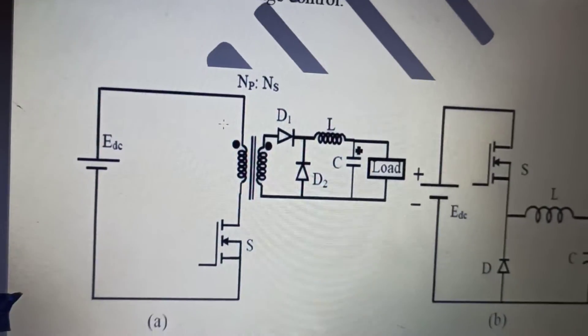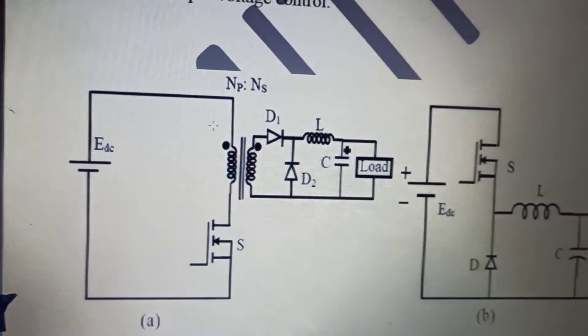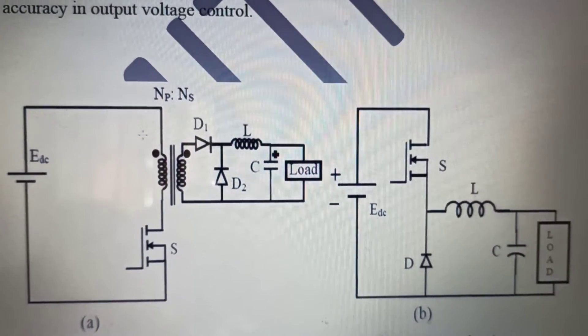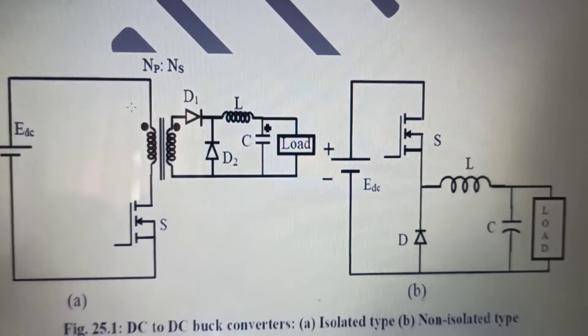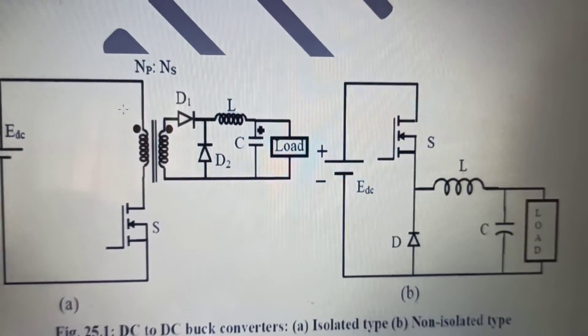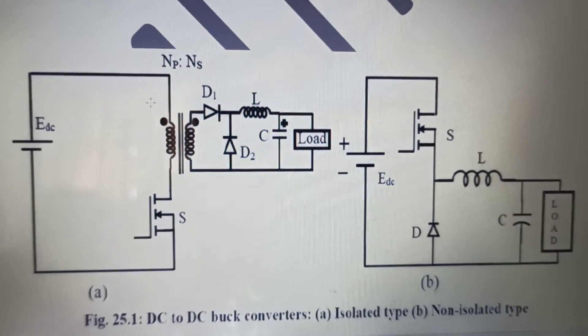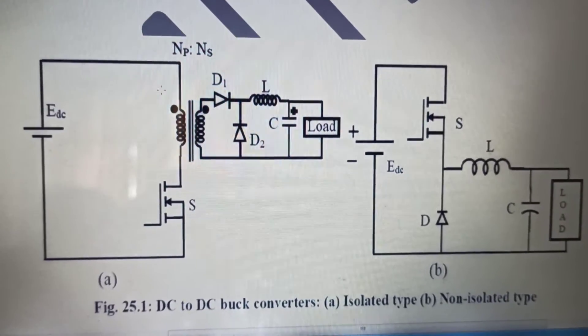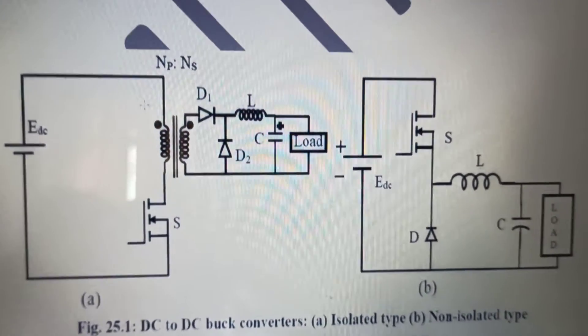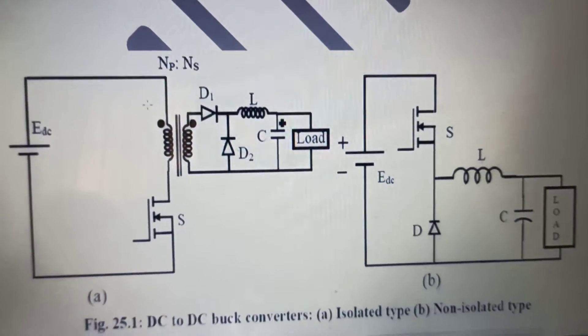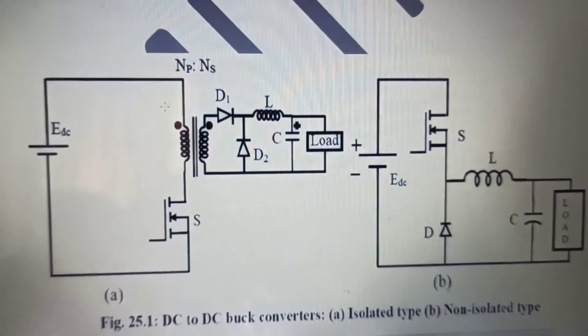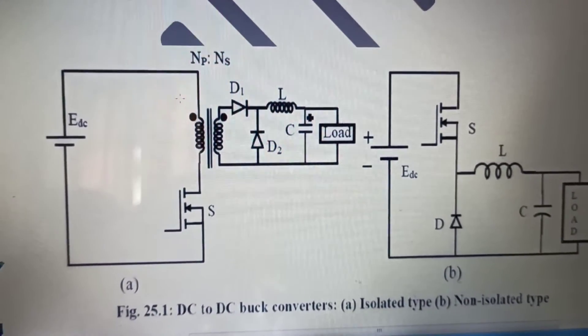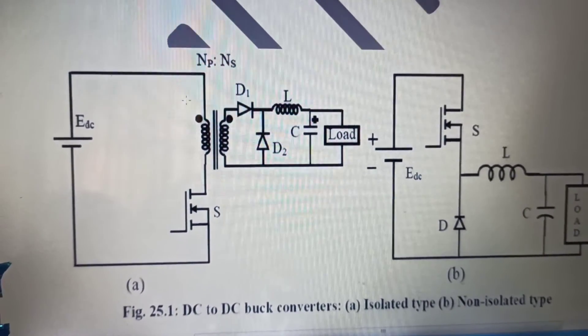But the only case is that we will not let the transformer get saturated. We will work in the linear region. Because if the transformer gets saturated, then from the BH curve, we can very well know that even for a very small increment in magnetic flux, a large amount of current will be drawn if we are operating the transformer in saturation. If you want to increase the flux by a very small value, that is phi and i.